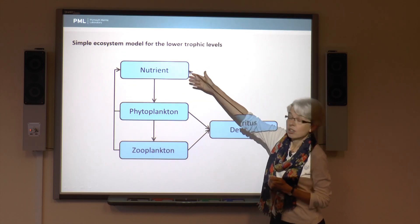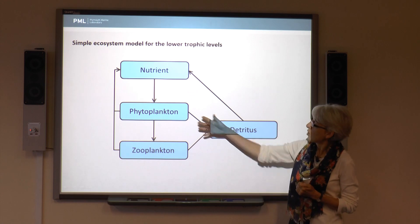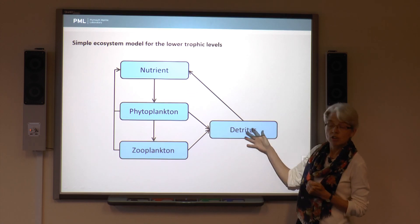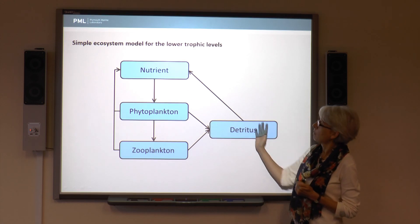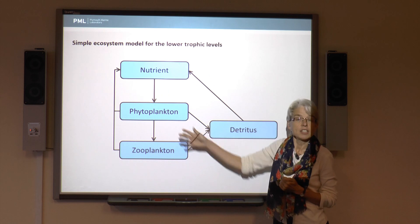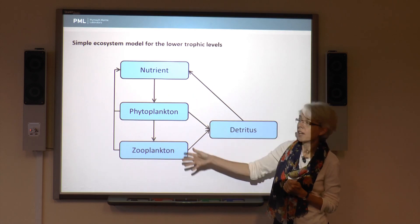Phytoplankton will use nutrients to grow. When the two kinds of plankton die, they might become detritus in the water. Some of that will dissolve, become further nutrients, and you've got a cycle building up.